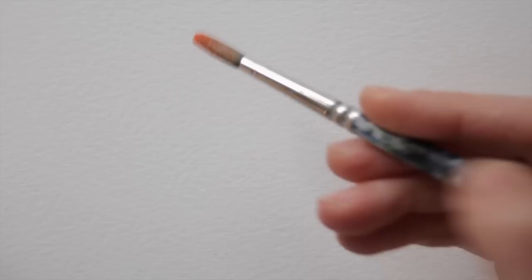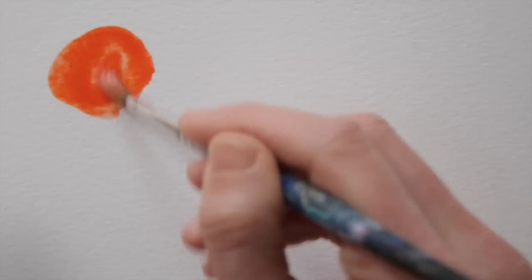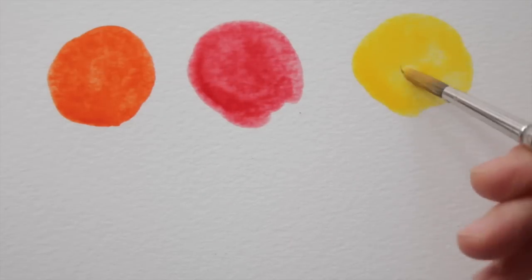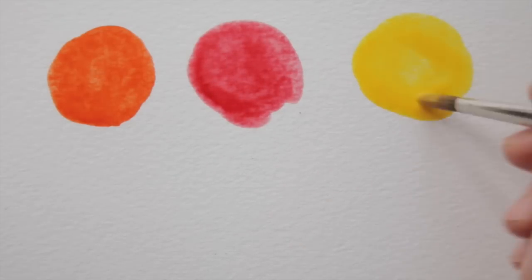Now pick up fresh colors from your palette and paint colored round blobs. Any color you'd like to combine. Pick up enough pigment with your brush to get vibrant colors. Watercolors tend to dry a bit lighter than they look when they are still wet.